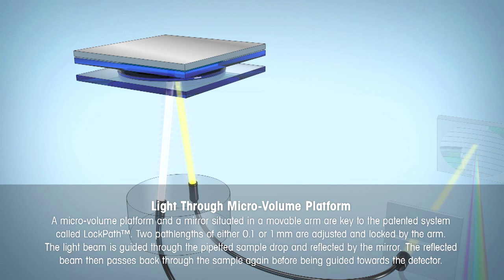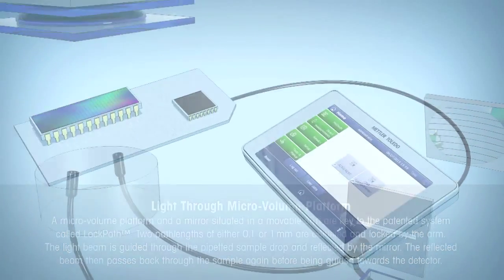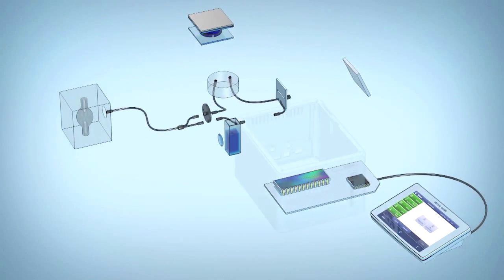Depending on the sample's characteristics, two pathlinks of either 0.1 or 1 millimeter can be adjusted and locked. The resulting pathlink is twice the physical distance between the surfaces of the optical cell and mirror. Because the beam is reflected and therefore passes through the sample solution twice, this principle reduces the amount of required sample.